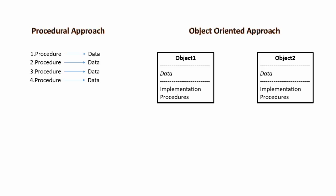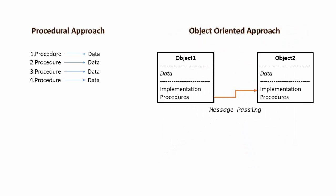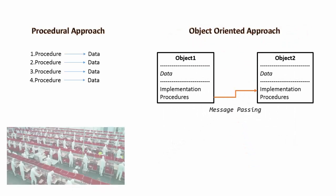In procedural approach, we have a set of procedure that operates on a set of data sequentially. So, data and procedure are two different things. However, in object-oriented approach, data and implementation logic are clubbed together to make a single object. Such multiple objects interact with each other to create a system where they pass message to each other by way of method calls or events and signaling.